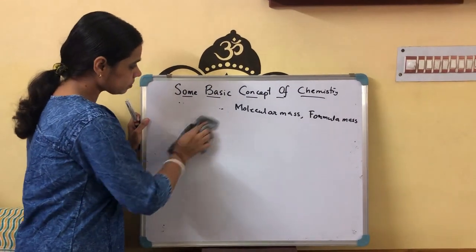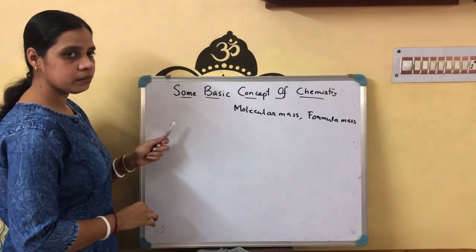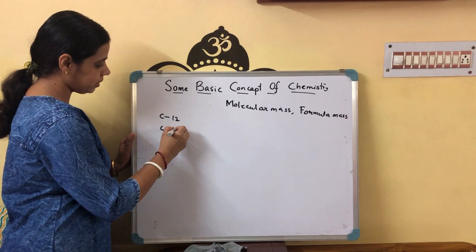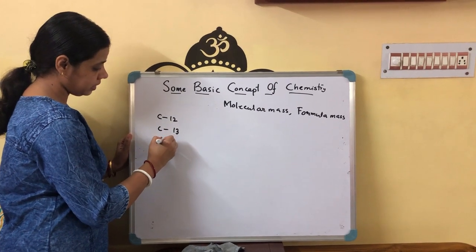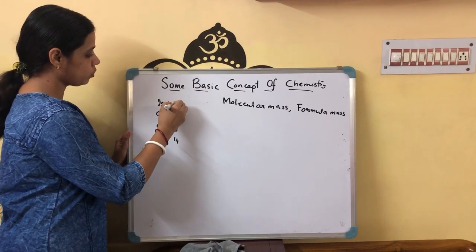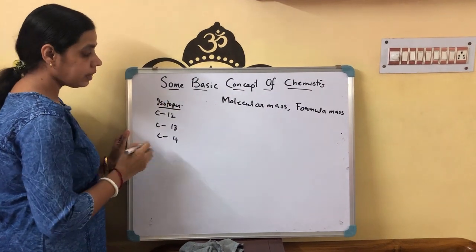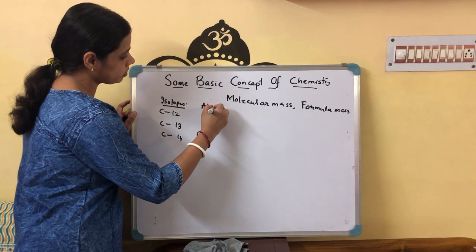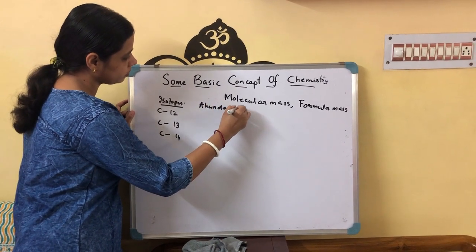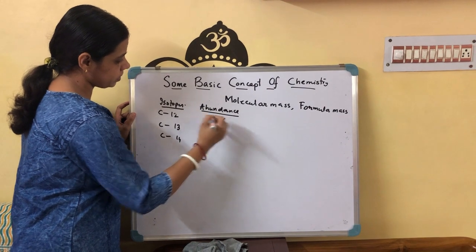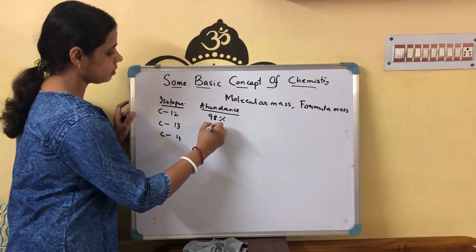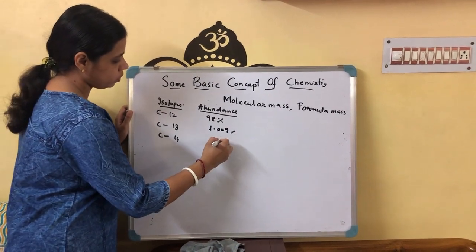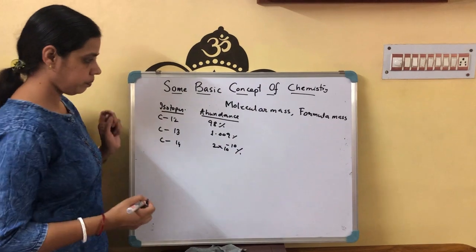How can we calculate it? I will explain by taking an example. You know carbon has three isotopes: C12, C13, and C14. Their percentage of abundance on Earth — C12 has 98%, C13 has 1.009%, and C14 has 2×10⁻¹⁰%.